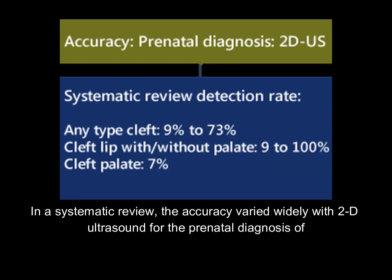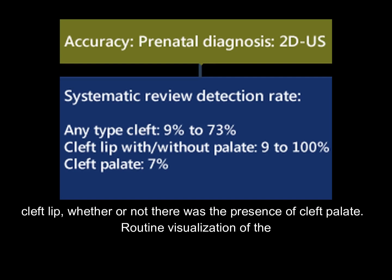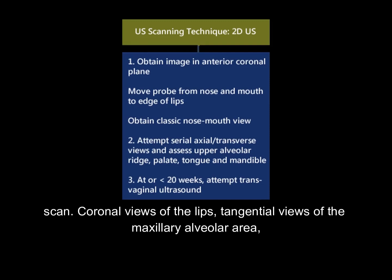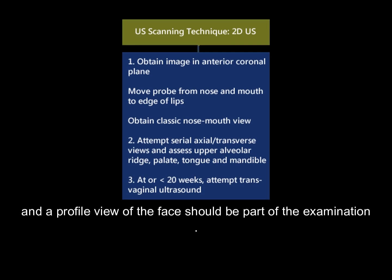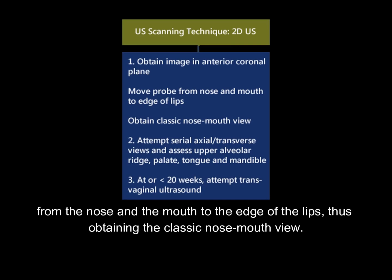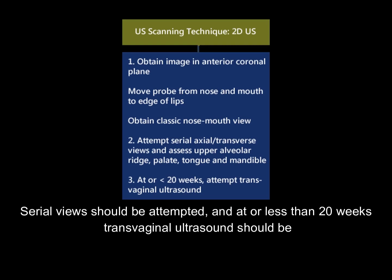In a systematic review, the accuracy varied widely with 2D ultrasound for the prenatal diagnosis of cleft lip, whether or not cleft palate was present. Routine visualization of the fetal face and lip should be part of the mid-trimester scan. Coronal views of the lips, tangential views of the maxillary alveolar area, and a profile view of the face should be part of the examination. In a 2D examination, images are obtained in the anterior coronal plane and the probe is moved from the nose and mouth to the edge of the lips, obtaining the classic nose-mouth view. Serial views should be attempted, and at or less than 20 weeks, transvaginal ultrasound should be attempted.